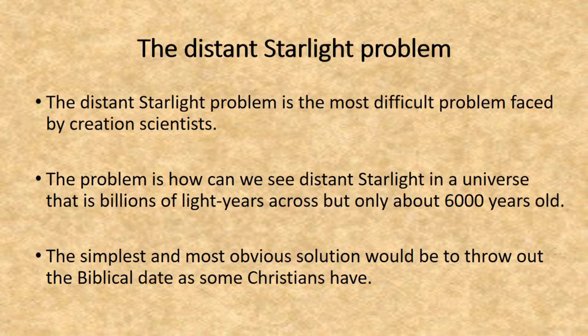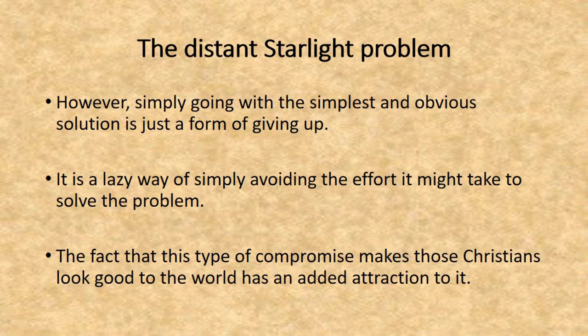The distant starlight problem is the most difficult problem faced by creation scientists. The problem is how can we see distant starlight in a universe that is billions of light years across but only 6,000 years old. The simplest and most obvious solution would be to throw out the biblical date, as some Christians have. However, simply going with that solution is just a form of giving up — a lazy way of avoiding the effort it might take to solve the problem. The fact that this type of compromise makes those Christians look good to the world has an added attraction to it.